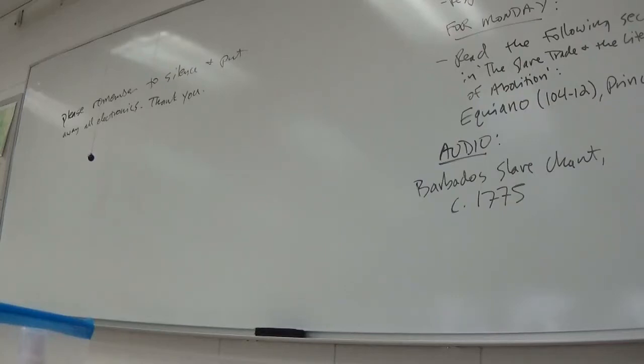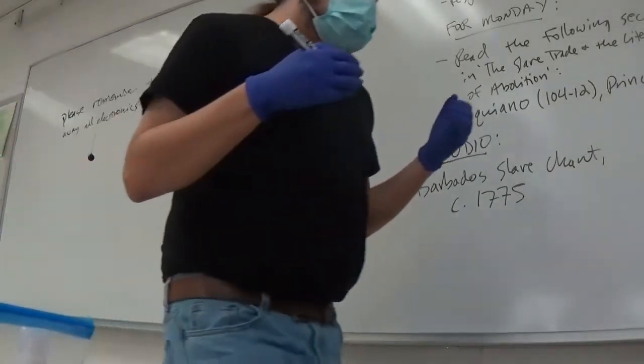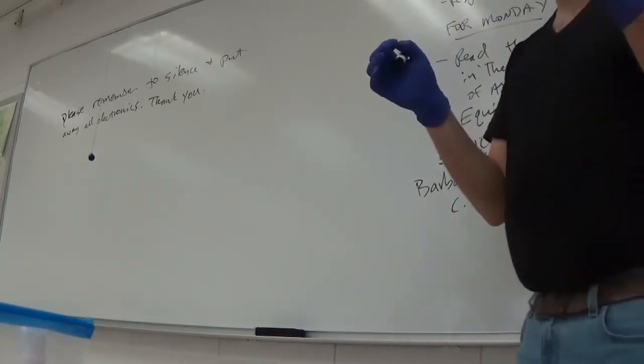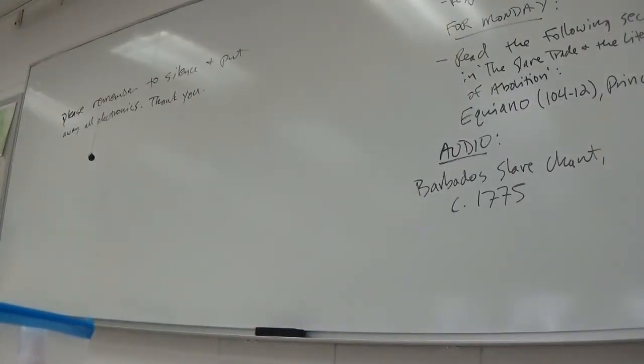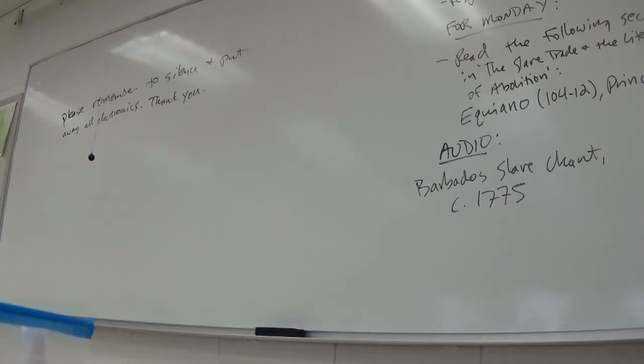We're going to be continuing reading about the slave trade and abolition for next time. So you're going to be reading the excerpts from the autobiographies of Olaudah Equiano and Mary Prince. Today, we're going to be looking at the work of white abolitionists and one pro-slavery advocate. Next time, we are going to be looking at black Britons in their own words.